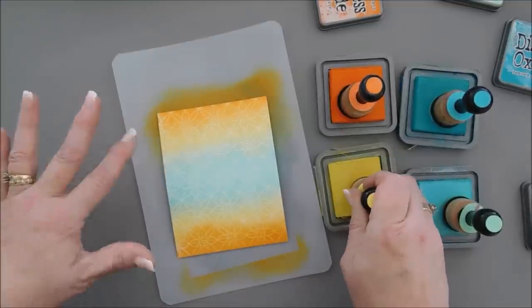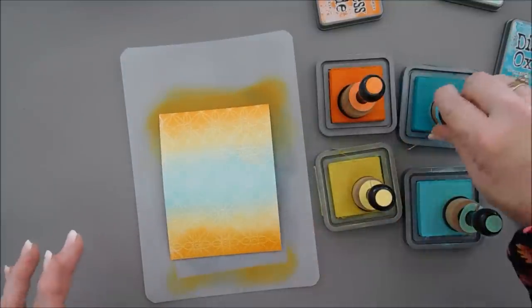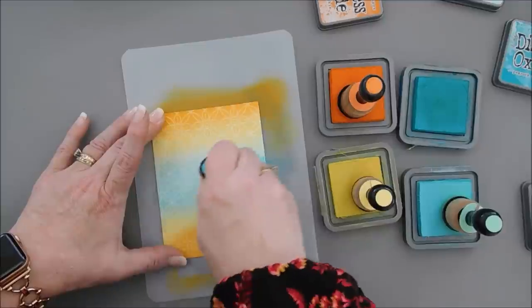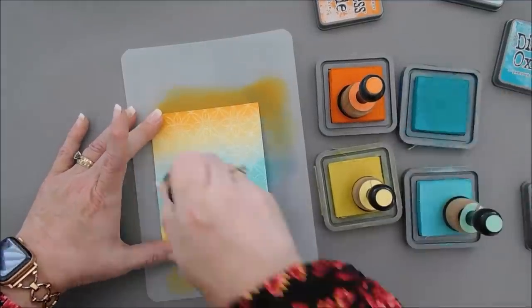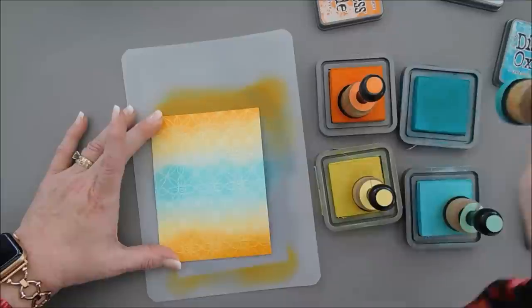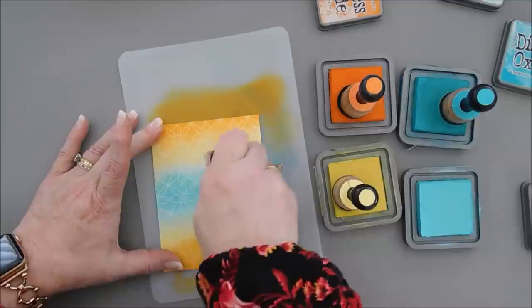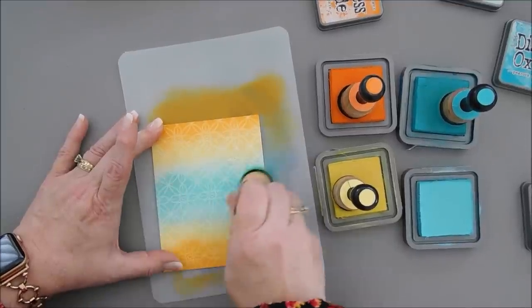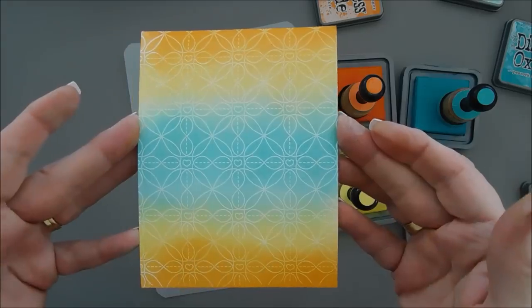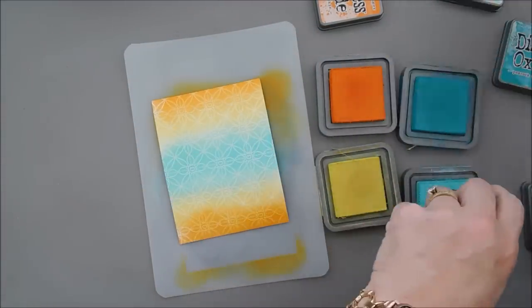For the most part, I just want the orange, the yellow, and the salvaged patina. And I'm going to take my peacock feathers and go right down the middle. And I think that's going to work out beautifully. Okay, I'm going to put my inks off to the side.